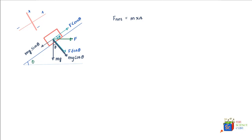Another force that acts on the body is the normal reaction, which is the force that the inclined plane exerts on the mass, pushing it upward in this direction. This is the vector for the normal reaction — let's call it N.